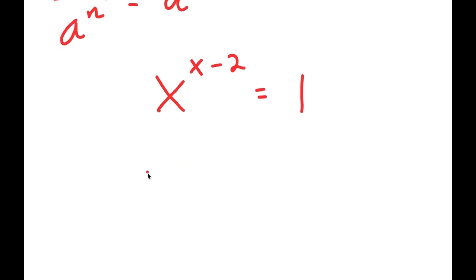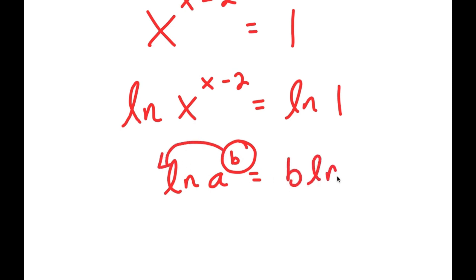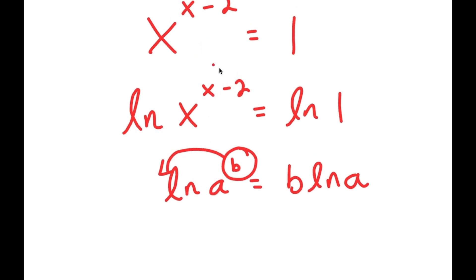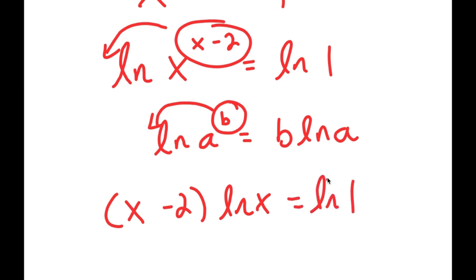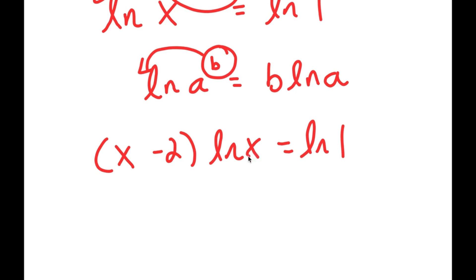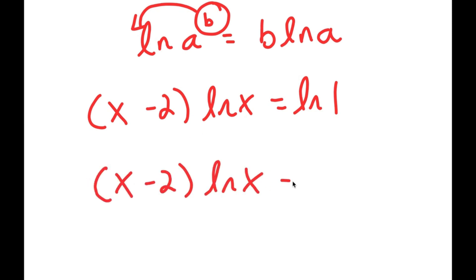Now I can take the natural log on both sides. So I have ln of x to the power of x minus 2 is equal to ln of 1. An important property of logarithms is that if I have something in the form ln of a to the power of b, I can move this exponent b to the front, giving b times ln a. This is very useful because x is currently an exponent, which is hard to solve for. Using this property, I move it to the front. So I get x minus 2 times ln x is equal to ln 1, and ln of 1 equals 0. So x minus 2 times ln x is equal to 0.